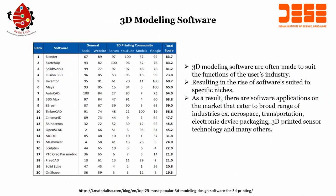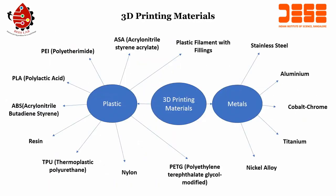There are several modeling software available based on the application or industry. Software applications cater to a broad range of industries — aerospace, transportation, electronic device packaging, and 3D printed sensor technology. Options range from Blender, Sketchup, Solidworks, Fusion, Inventor, Maya, AutoCAD and many more. Blender has the highest general score. We can take any one from the first seven if you want to start working on 3D printing.